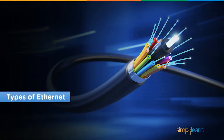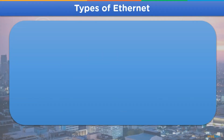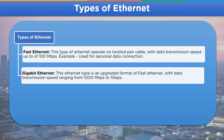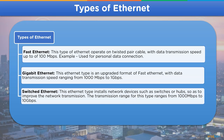Now we will look into different types of Ethernet. In general, Ethernet is divided into three different types. First is Fast Ethernet, which operates on a twisted pair cable with a data transmission speed of up to 100 Mbps. Fast Ethernet connections are used for personal connections or in companies that require low internet connection speeds. Moving on, we have Gigabit Ethernet, used for high speed internet connection with a speed ranging from 1000 Mbps to 1 Gbps — an upgraded form of Fast Ethernet. And the last type is Switched Ethernet, which installs network devices such as switches or hubs to improve network transmission, with a transmission range of around 1000 Mbps to 10 Gbps.